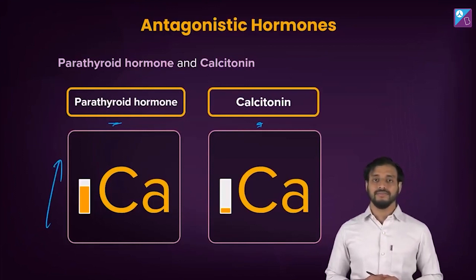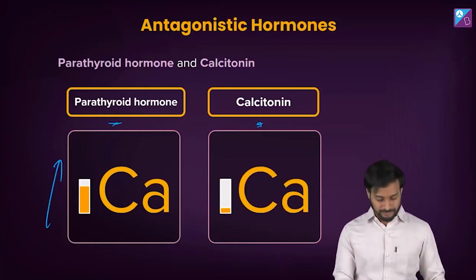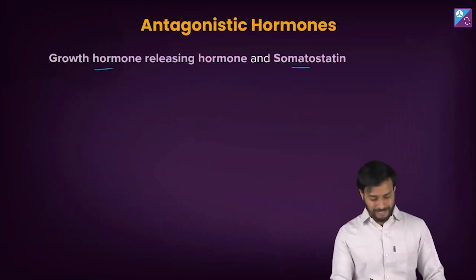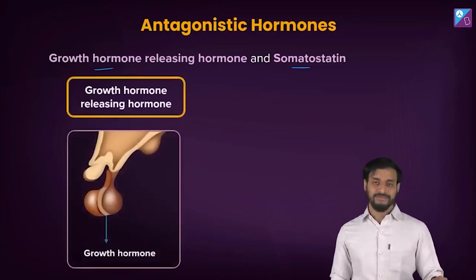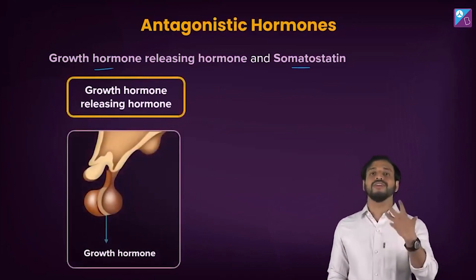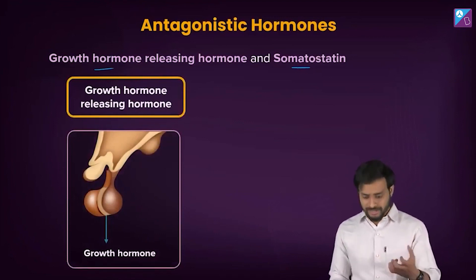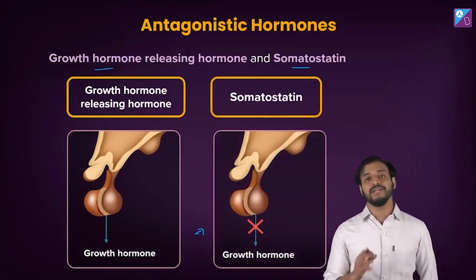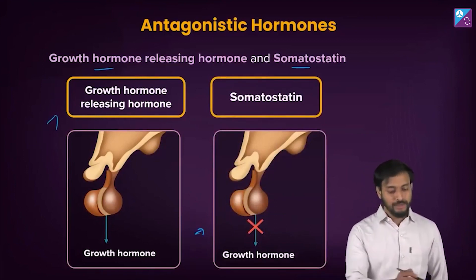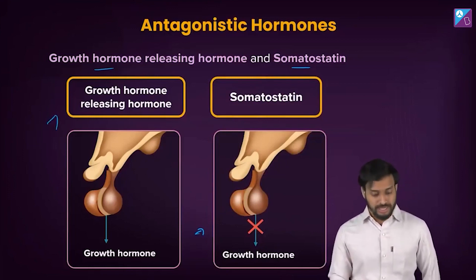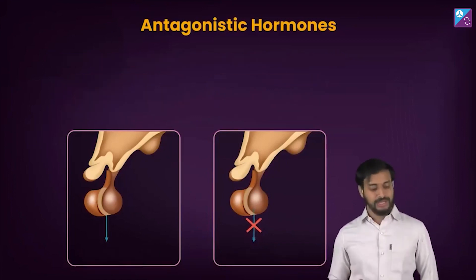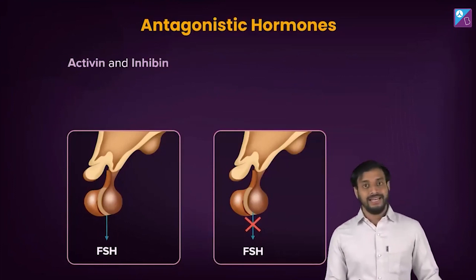Other examples: growth hormone releasing hormone and somatostatin. Growth hormone releasing hormone promotes the release of growth hormones. Somatostatin is the opposite — it inhibits the production of growth hormones. So growth hormone releasing hormone helps in the production of growth hormones, and somatostatin stops or reduces growth hormone production.